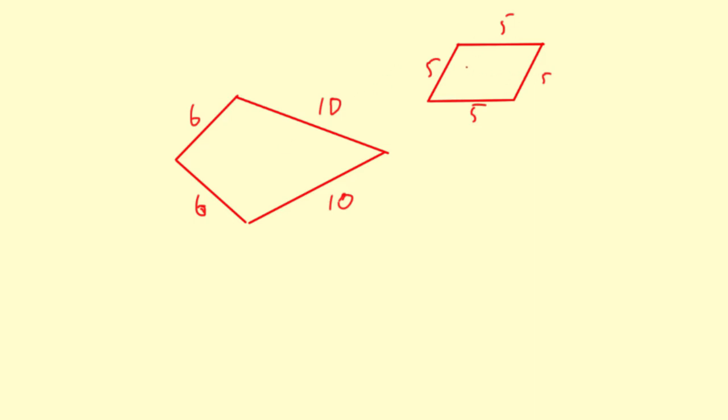It's a four-sided shape that has all four sides the same length. So in this case, the sides are all five in length, and that makes it a rhombus.